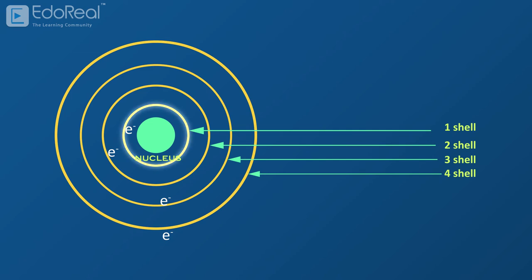The closest shell to the nucleus is called the first shell or K shell, and the next shell is called the second shell or L shell, then the third shell or M shell, and so on further and farther from the nucleus.